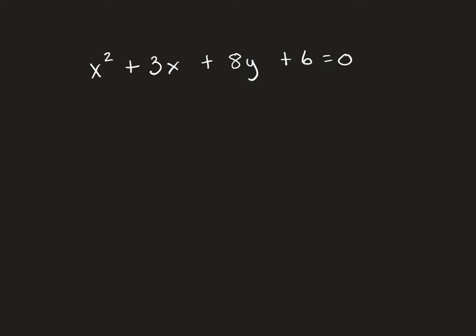The first hint I get that this is not a circle is that x is squared and the y is not. When only one of them is squared, it's generally a parabola, so what I want to do since I think it's a parabola is get y by itself.